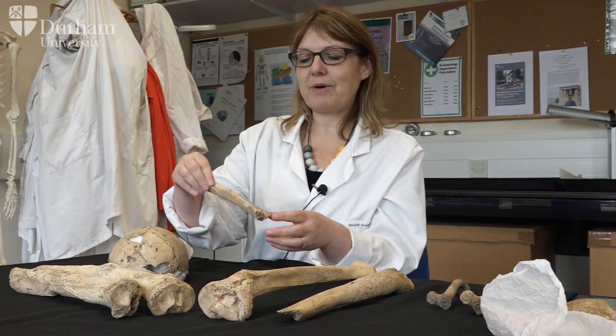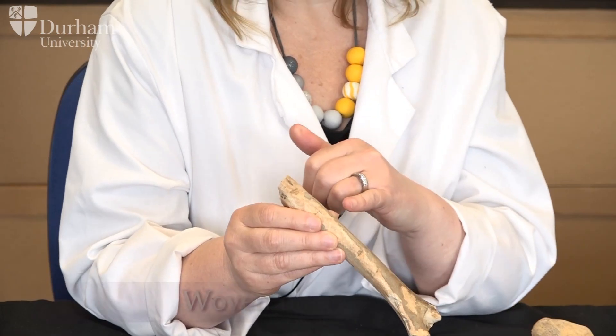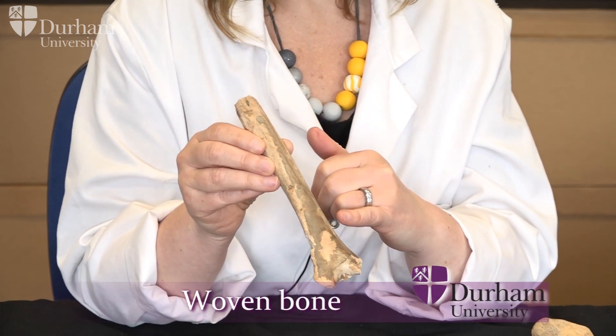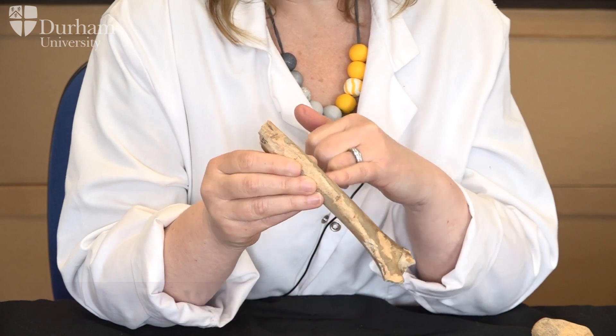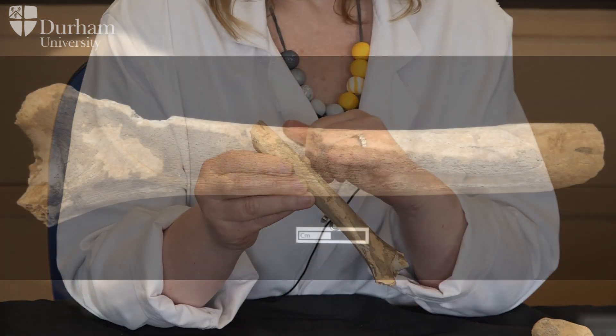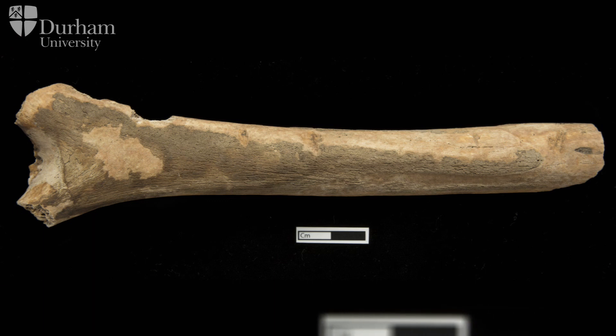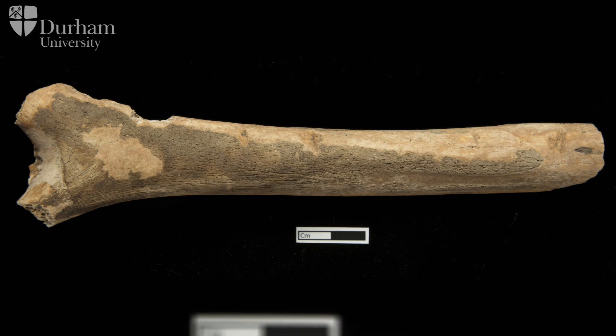What I'm going to do here is take you through some of the basics of recording these changes so that later on you can perhaps attempt a diagnosis. Starting with new bone formation: bone will react to inflammation or trauma by forming new bone, in the form of woven bone, which as you can see is a slightly different, darker gray color from the normal bone surface. It's mechanically weak and quite porous.